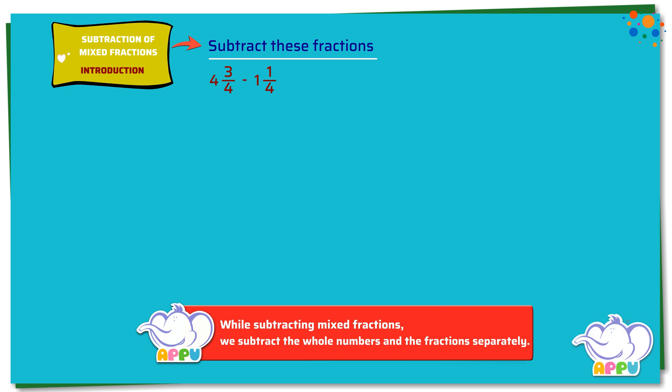We subtract the whole numbers first. 4 minus 1 equals 3. Then we subtract the fractions: 3/4 minus 1/4. We see that the denominators are the same for both the fractions — that is 4.